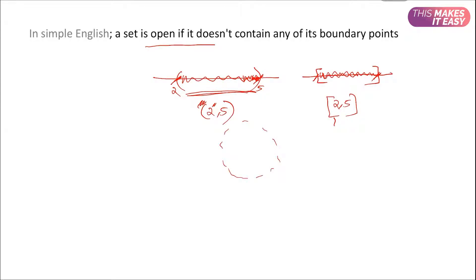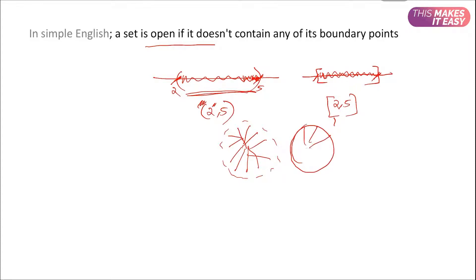In two dimensions, let's take a set like a circle. That circle includes all the points inside but not its boundary points — that makes it open. If it includes all the boundary points as well, then it is called a closed set. Now let's define open set in mathematical language.